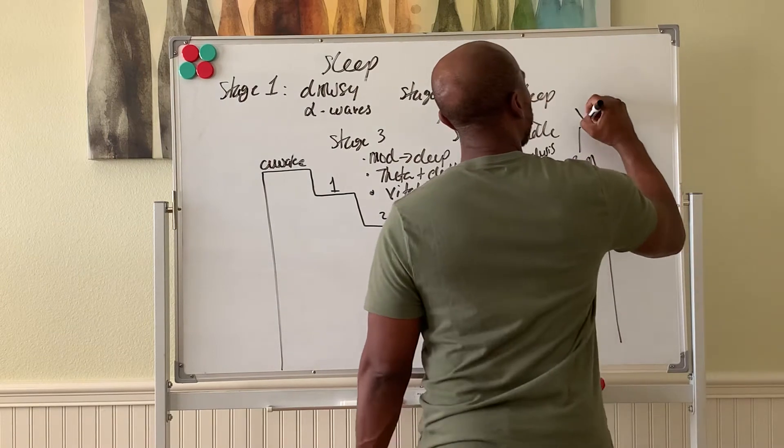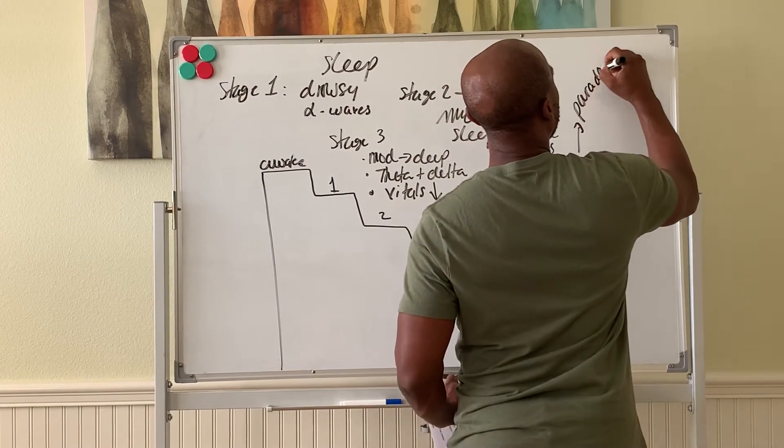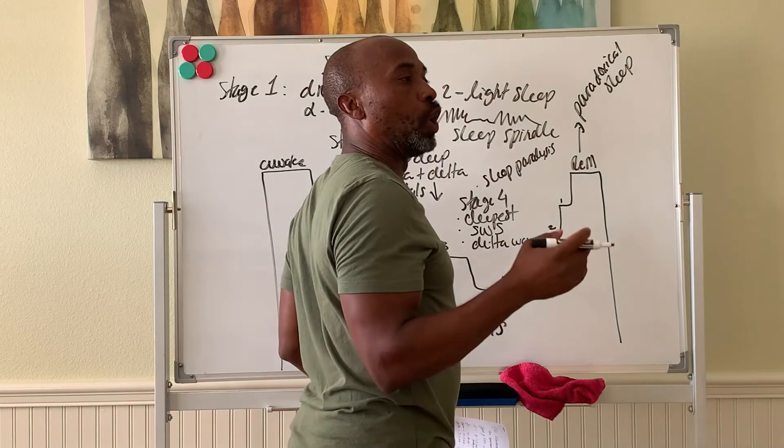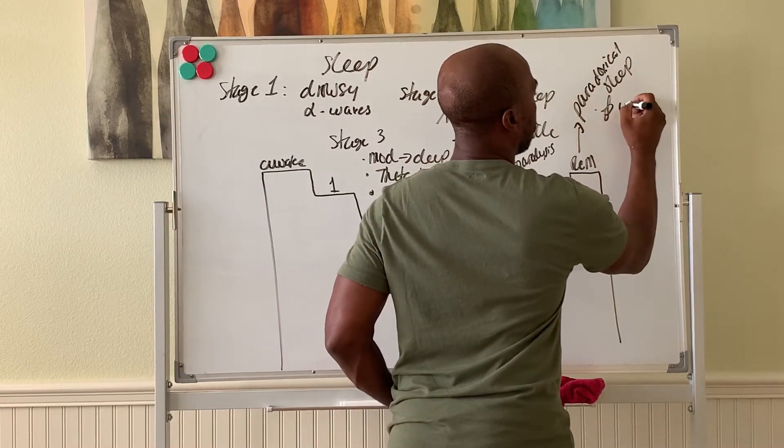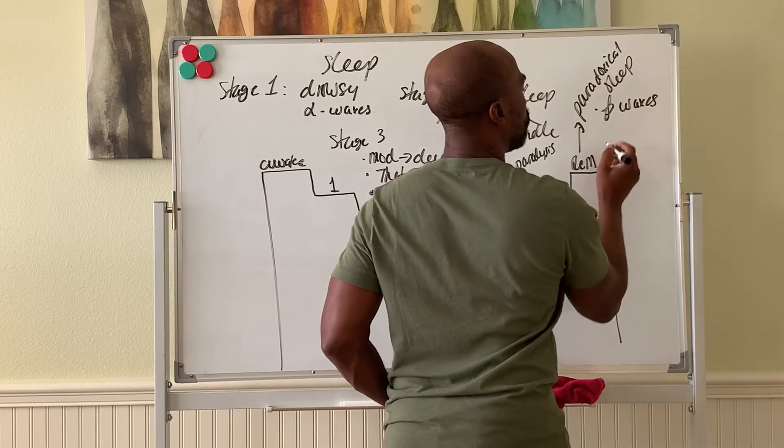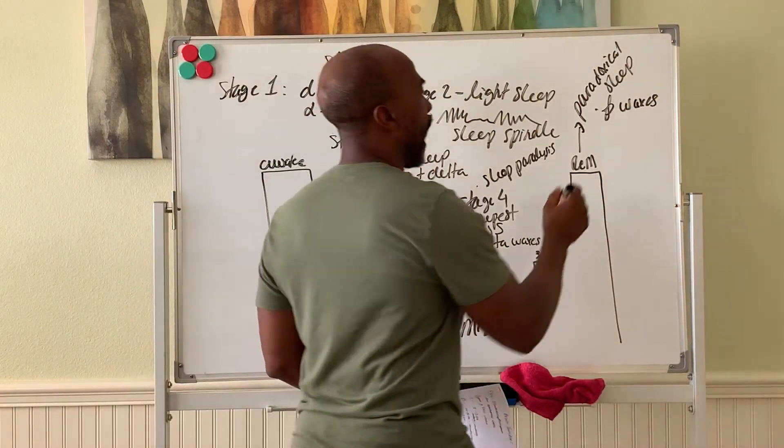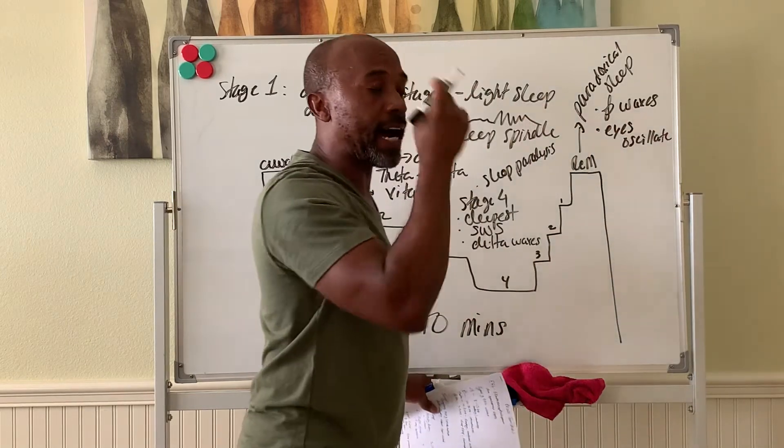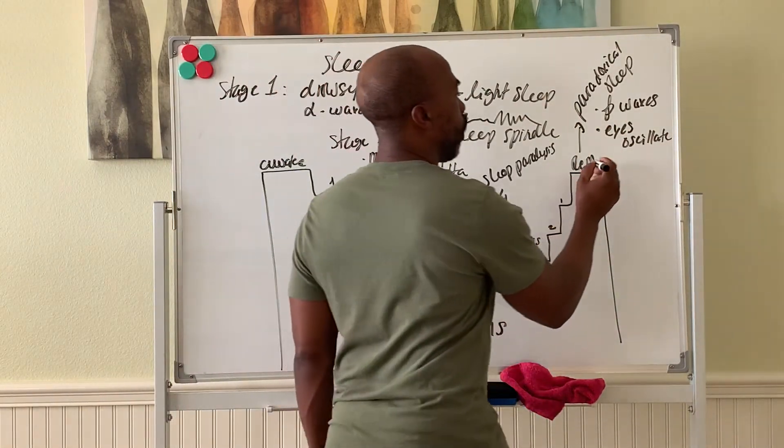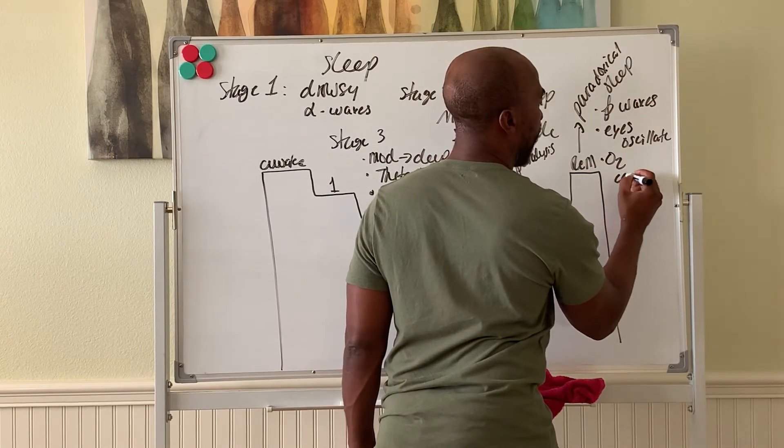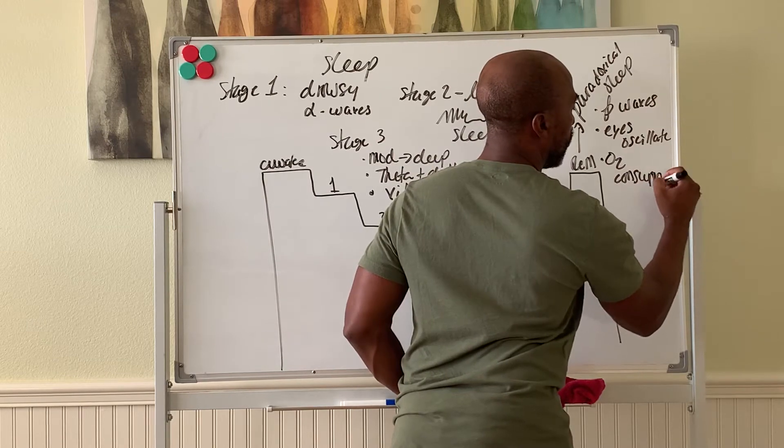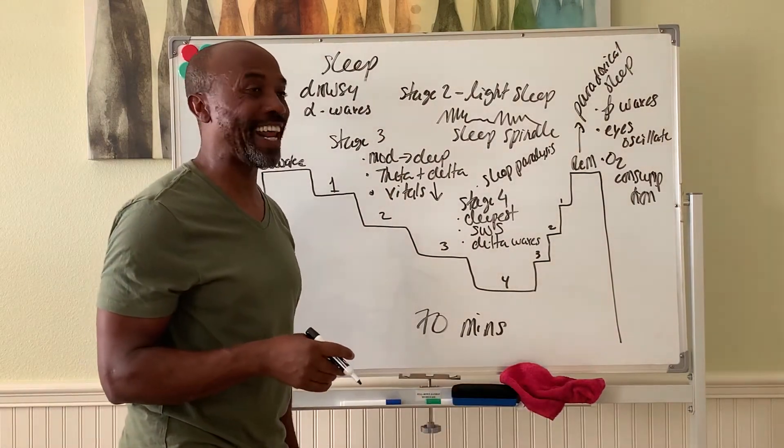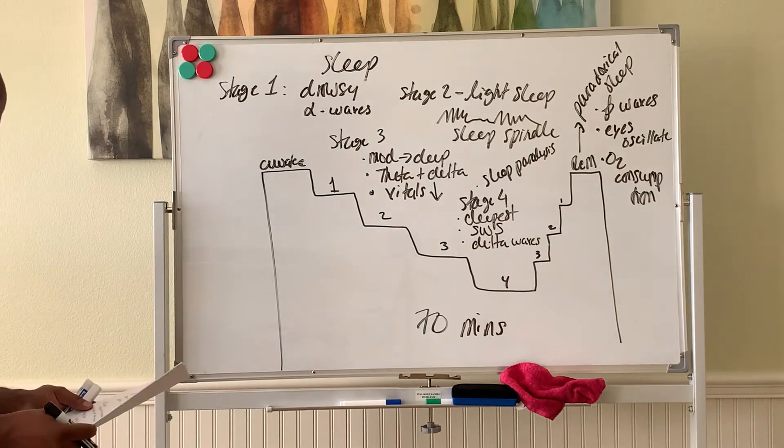REM sleep is what we call paradoxical sleep because here the EEG looks as if you're awake and concentrating. So here you have beta waves during REM sleep. Your eyes oscillate, move back and forth beneath your eyelids. That's why it's called REM, rapid eye movement sleep. Also, your O2 consumption is way up. You consume more oxygen during REM sleep than when you're awake. So it's a really active form of sleep.